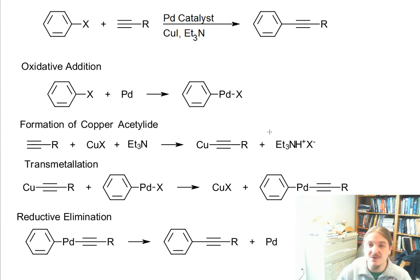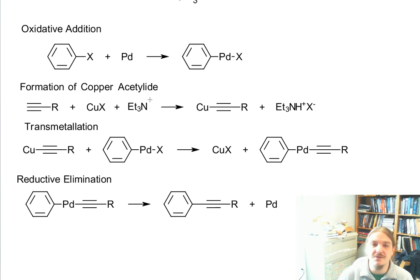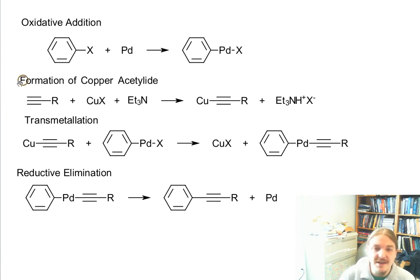So palladium goes from palladium zero to palladium plus two. And then separately, the alkyne is reacting with the copper compound in the presence of triethylamine as a base or any other kind of appropriate base to form the copper acetylide.